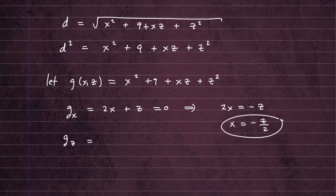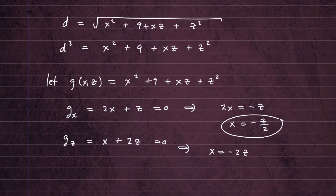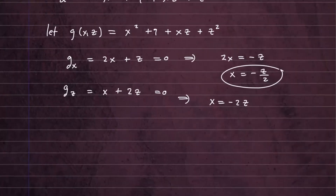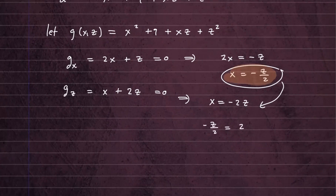The partial of G with respect to Z equals X plus 2Z. Setting that equal to 0 gives us X equals negative 2Z. Now let's take the expression X equals negative Z over 2 and plug it into X equals negative 2Z. So we have negative Z over 2 equals negative 2Z.